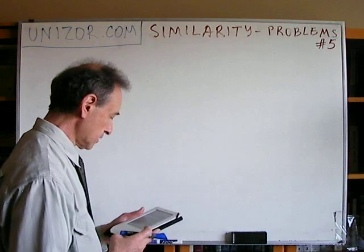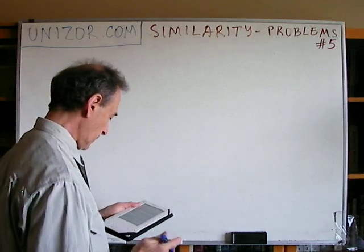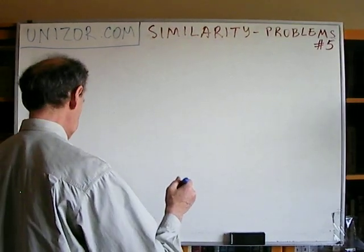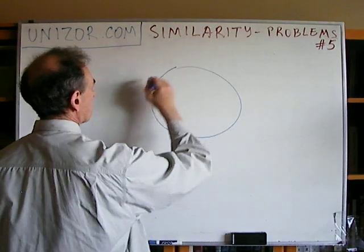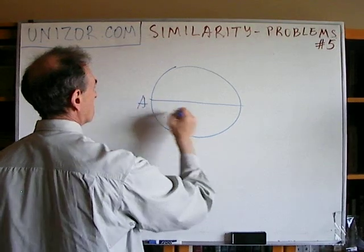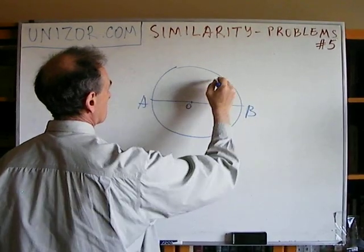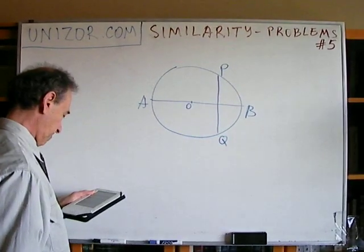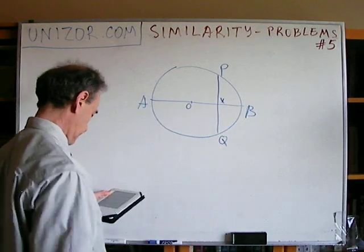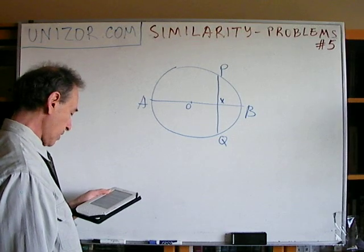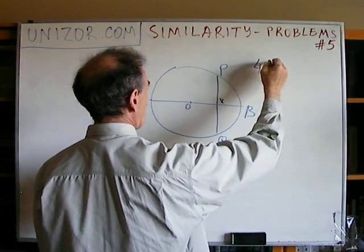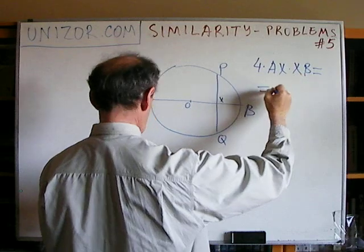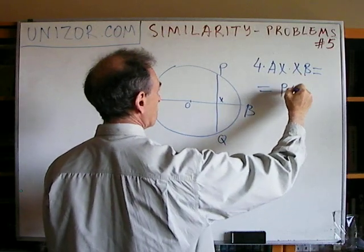So what kind of problems are we facing right now? Given a circle with a diameter AB and chord PQ perpendicular to the diameter. There is a circle — this is diameter AB which goes through the center, and chord PQ is perpendicular to it, intersecting at point X. Prove the equality: 4 times AX times XB is equal to PQ squared.